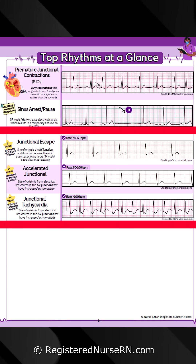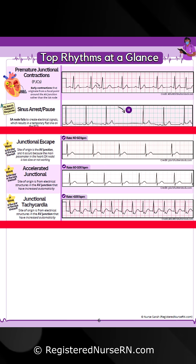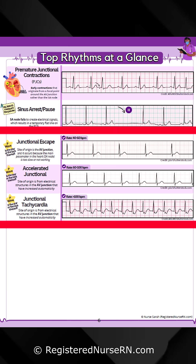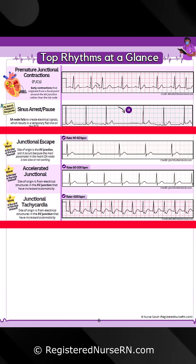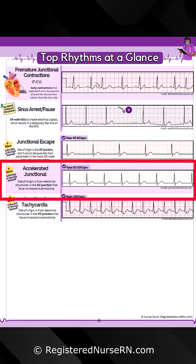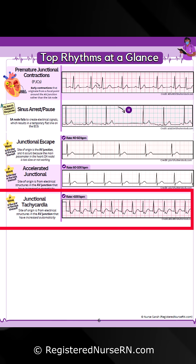Lastly, the junctional rhythms. The site of origin is from the AV junction, and they occur because the main pacemaker in the heart — the SA node — is too slow or not working. P wave position is the star of these rhythms: the P wave can be hidden within the QRS complex, super close to the QRS complex in front of it, or behind the QRS complex. With junctional escape, the rate is 40 to 60 beats per minute; accelerated junctional is 60 to 100 beats per minute; and junctional tachycardia has a rate greater than 100.